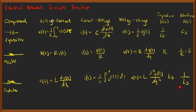In this lecture we'll be continuing our discussion on electrical network transfer functions, but with another way of getting the transfer function. We will focus on the column of the table with impedance and admittance. The impedance for a capacitor is 1/Cs, for a resistor it is 1/R, and for an inductor it is Ls. The admittance is Cs for the capacitor, 1/R or G for the resistor, and 1/Ls for the inductor.